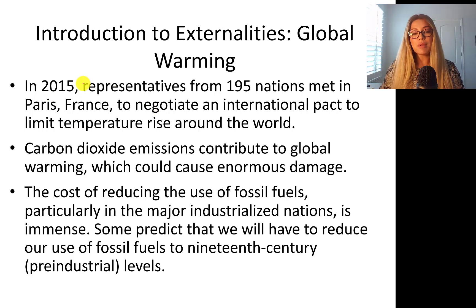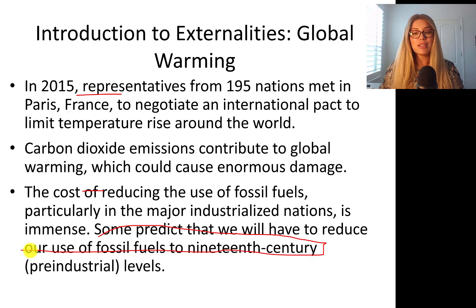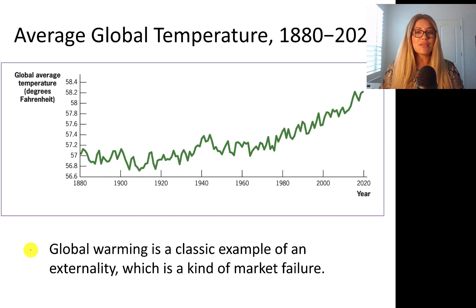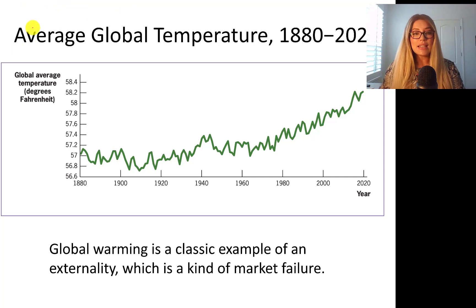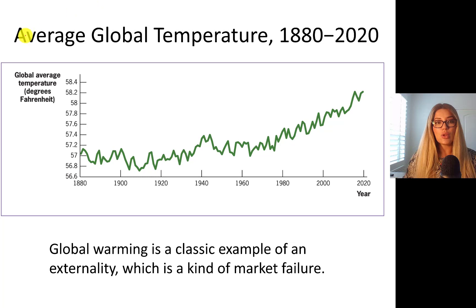Some people predict that we will have to reduce our use of fossil fuels to 19th century pre-industrial levels, which is going to be really hard. This chart shows the average global temperatures between the 1880s and 2020. As you can see, average global temperatures have been increasing.